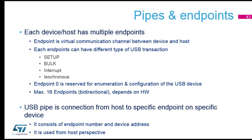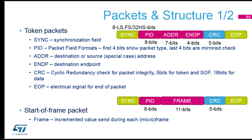A USB pipe is a connection from the host to a specific endpoint. So when you want to communicate with a device, it's always through an address but also through an endpoint. You need both pieces of information to communicate with your final device.